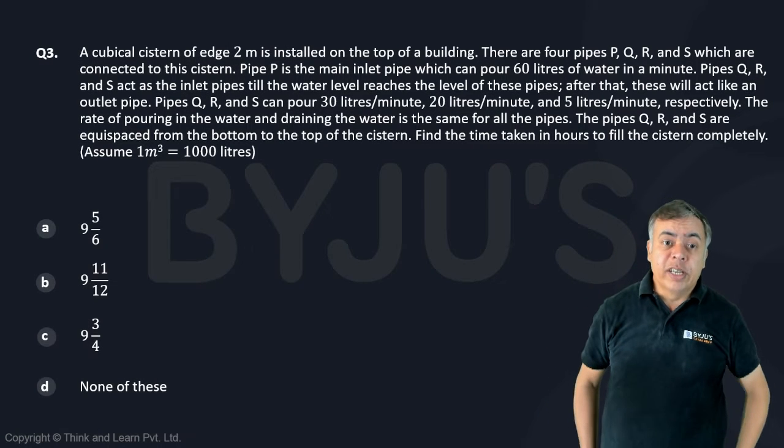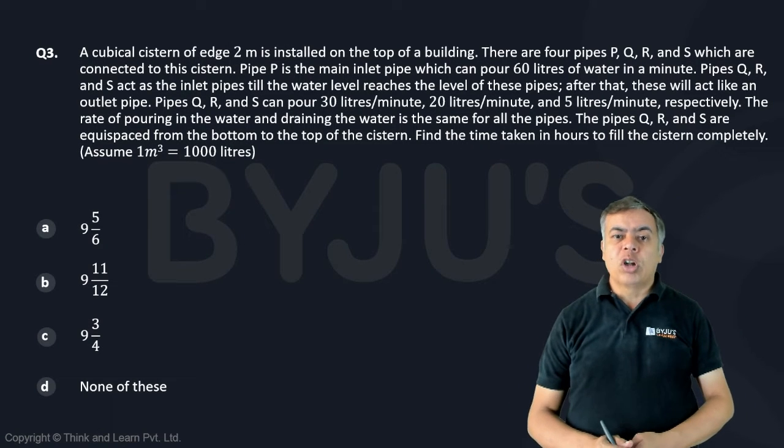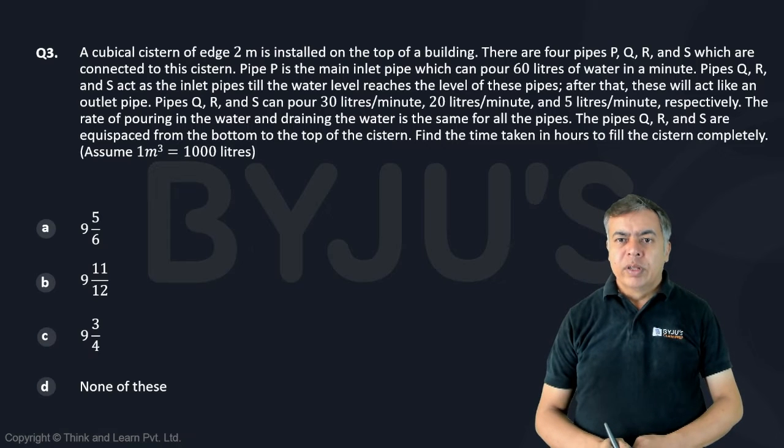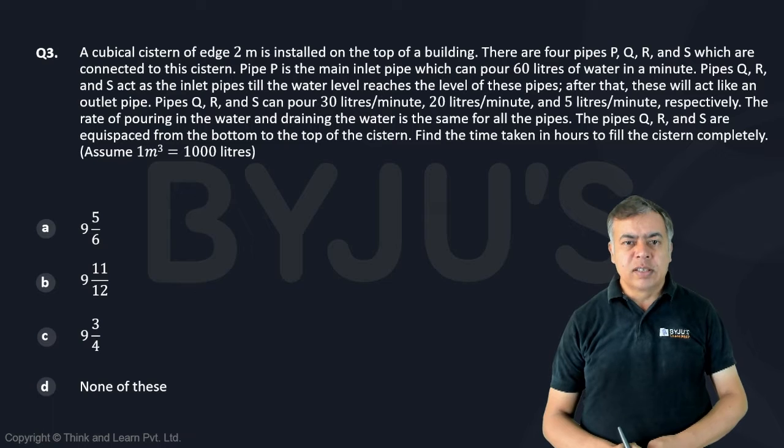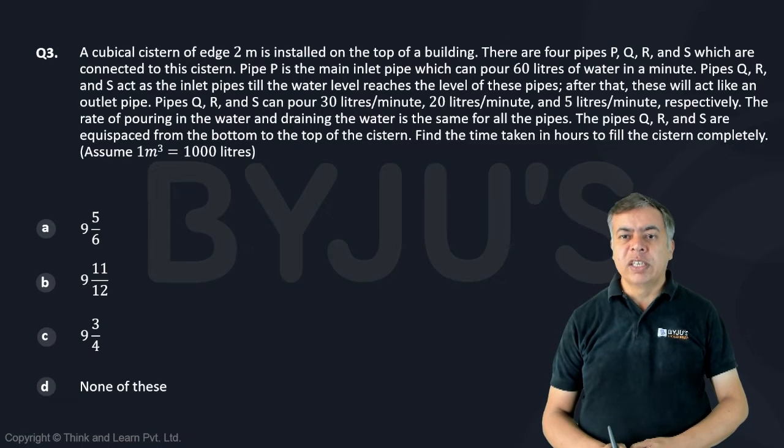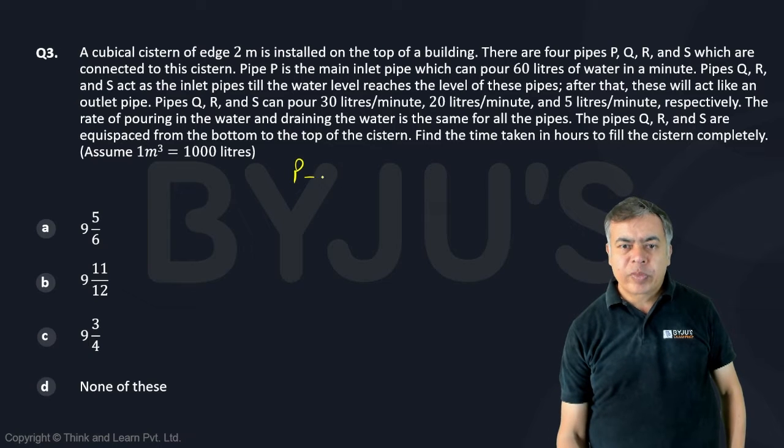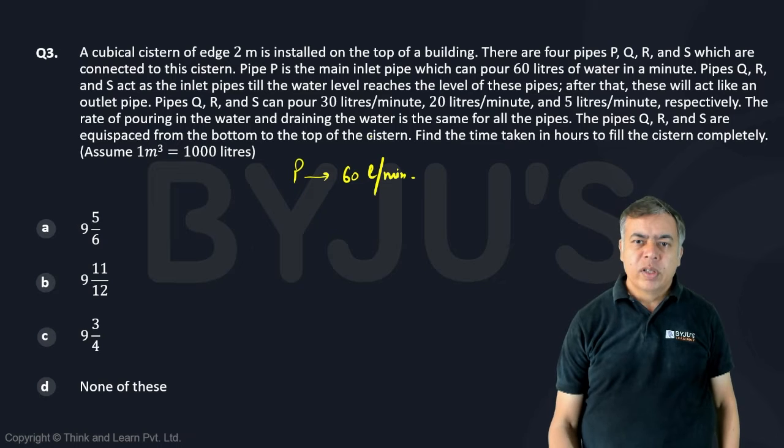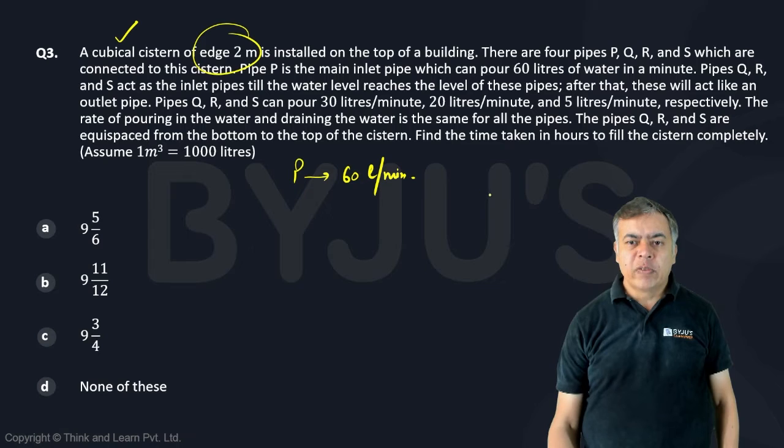Okay, so the question is a cubical system of edge 2 meters is installed on the top of a building. There are four pipes PQRS which are connected to this system. Pipe P is the main inlet pipe which can pour 60 liters of water in a minute. So pipe P 60 liters per minute. And the system is 2 meter, it is a cubical, so 2 into 2 into 2, it will be 8 meter cube.